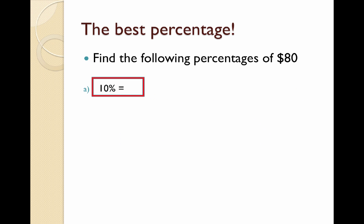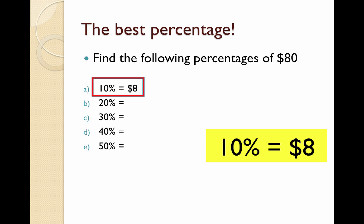If I wanted to find 10% of $80, which is the example I have here, I just need to remove the zero at the end to get $8. But what if I wanted to find something else besides 10%? What if I wanted to find 20%, 30%, 40%, or 50%?